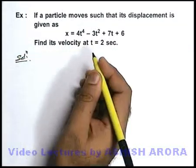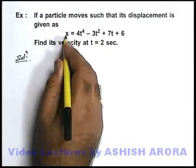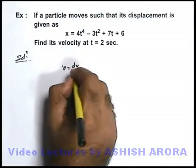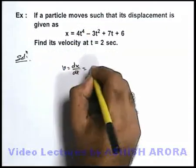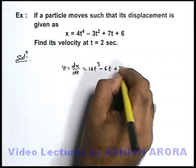So here the question is almost directly handled just by differentiating the displacement with respect to time. As we know v = dx/dt, on differentiating we get 16t³ - 6t + 7.